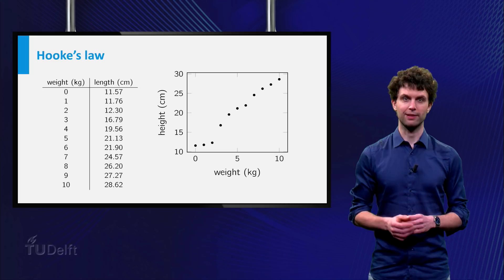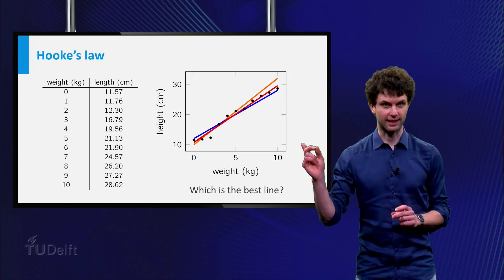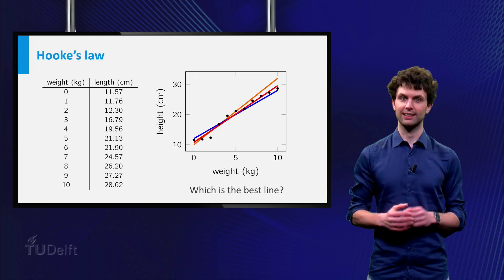Well, if we plot the points, we obtain a graph like this, and what we are looking for is the best straight line for these points. For instance, look at these straight lines. Intuitively, you probably consider the red line the best, and this is indeed the case. But how do we determine which line is the best?